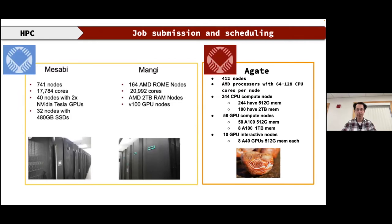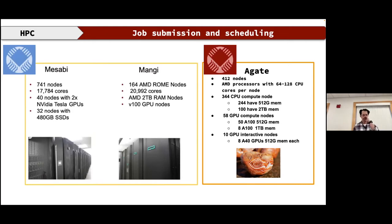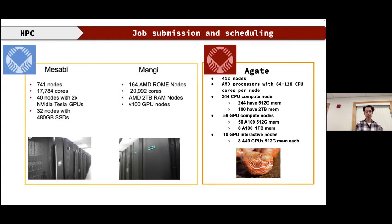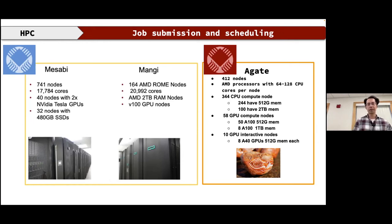The HPC clusters we have are Mesabi, Mangi, and Agate. Mesabi has 741 nodes, over 17,000 cores, 40 nodes with K40 Tesla GPU chips, and 32 nodes with 480 GB SSDs. Mangi is an AMD CPU cluster with 164 nodes totaling nearly 21,000 cores, some nodes with 2 TB of RAM, and V100 GPU nodes for GPU computing.